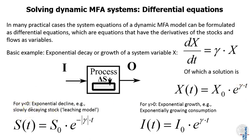If gamma is negative we have an exponential decline. That would be an example where we have a stock S0 slowly decaying over time with a factor e to the minus gamma t. This is what we call the leaching model, for example the stock of a pollutant in a landfill or in an ecosystem that is slowly decaying, is slowly degraded and then declines.